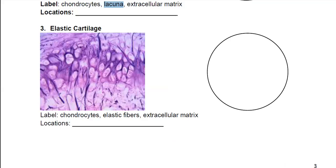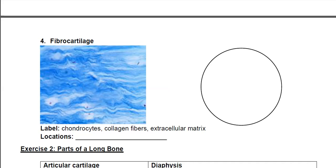Then there's fibrocartilage, which looks very different because this one stains blue and kind of looks like wavy water. You're looking at chondrocytes — find the nuclei and those are your chondrocytes. The blue waves are the collagen fibers, and everything else is the extracellular matrix.